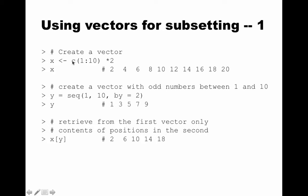Here we first create a vector of 10 elements with the values 1 to 10 multiplied by 2. So we say c(1:10) * 2. c(1:10) gives us a vector, and multiplying by 2 gives us the values 2, 4, 6, 8, and so on — the even numbers up to 20.